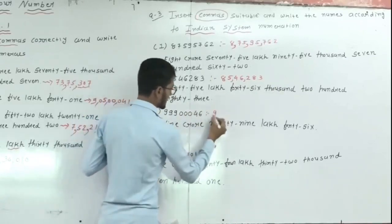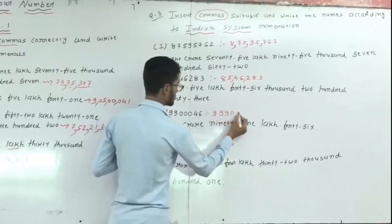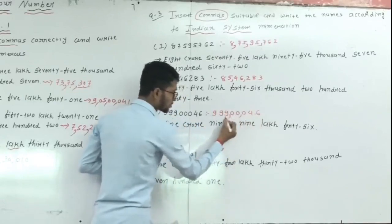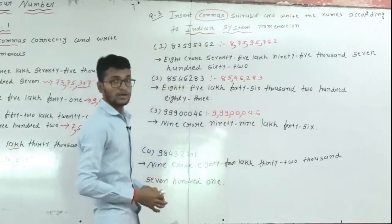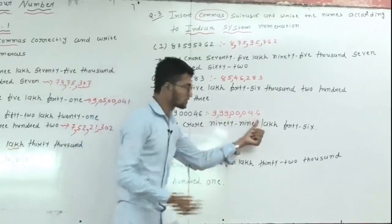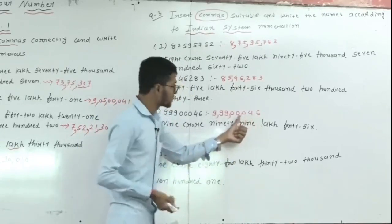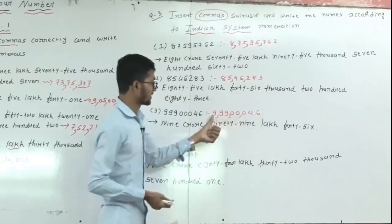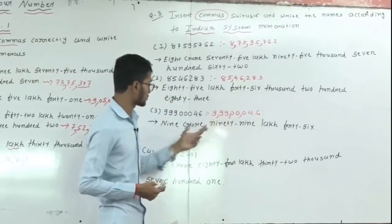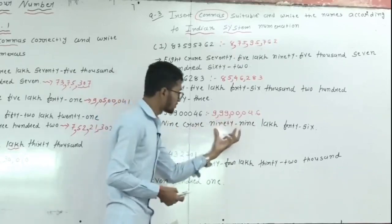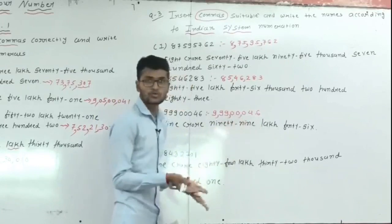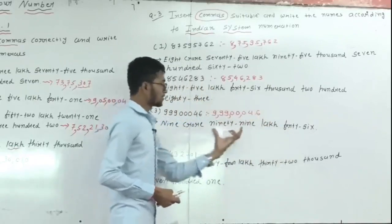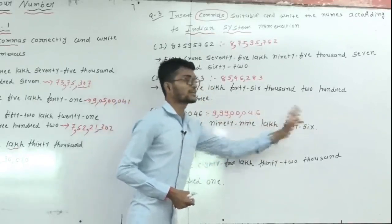Next number: 990000046. Apply Indian system: first 3 digits, comma, then 2, then 2. Place values: ones, tens, hundreds, thousands, ten thousands, lakh, ten lakh, crore. This gives nine crore, ninety-nine lakh. The middle digits are zeros, so skip them. Last digits are forty-six. So: nine crore, ninety-nine lakh, forty-six.